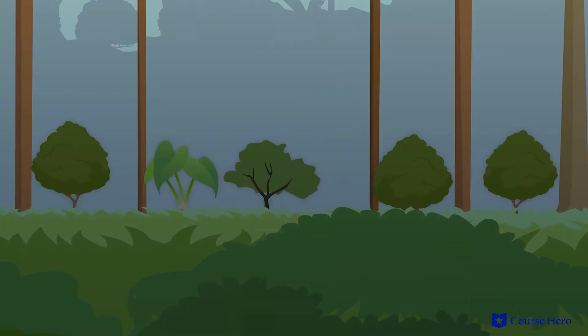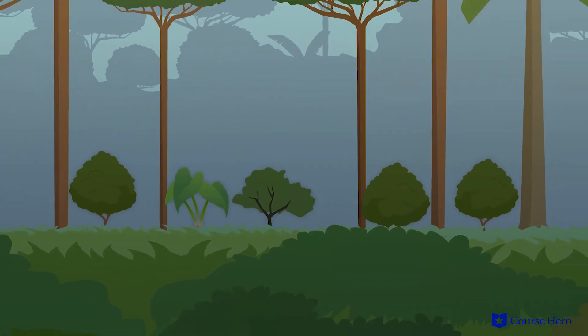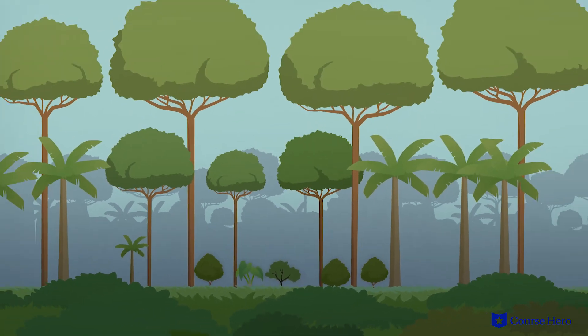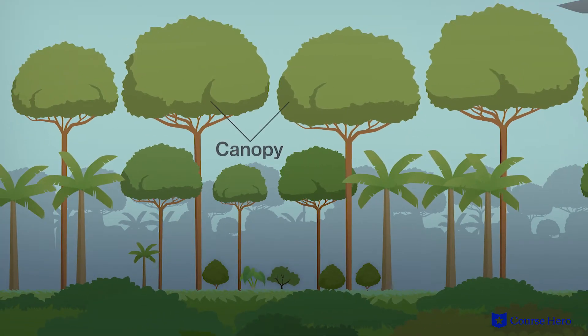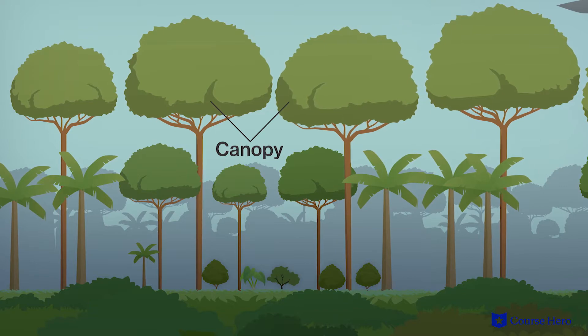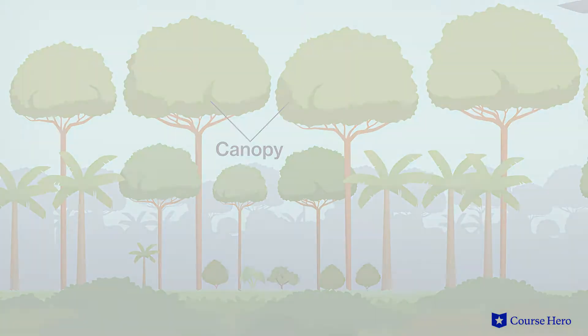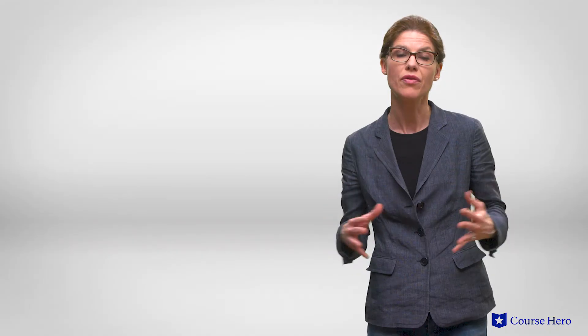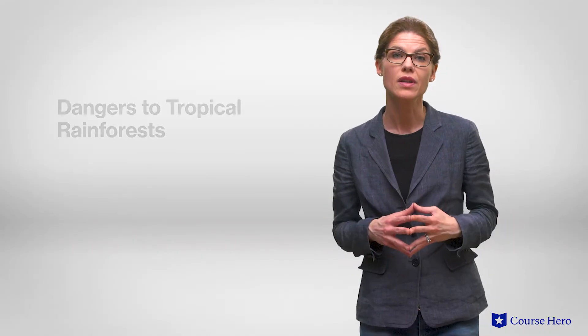Plants experience competition for sunlight because tall trees form a canopy or leafy covering that shades vegetation at lower levels. This results in few plants growing on the forest floor.